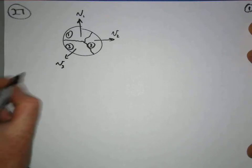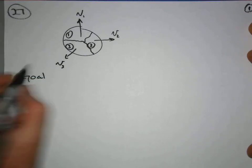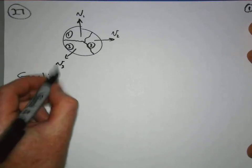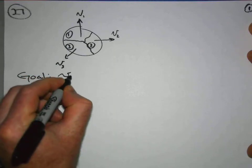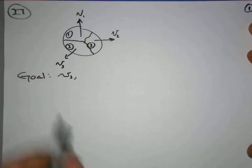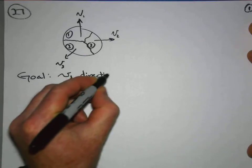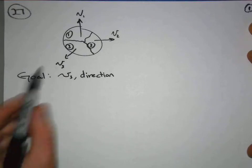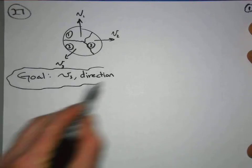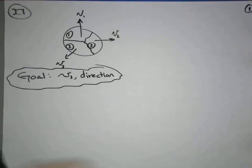So right away, I'm going to write down the goal. Here, what am I looking for? I want to find the value of v3 and I also want to find a direction, measured as an angle. There we go. I don't want to forget that. Don't lose track of that.